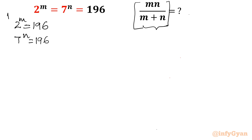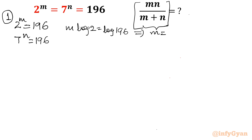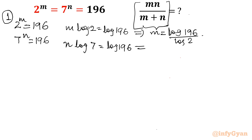This is Method 1. We will find out m and n by taking log both sides of the first equation: m log 2 equals log 196, which gives m equals log 196 over log 2. Now for the second equation, n log 7 equals log 196, which gives n equals log 196 over log 7.